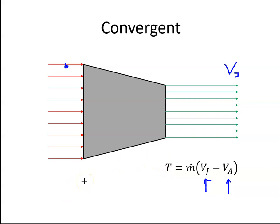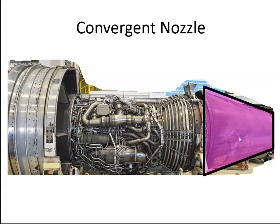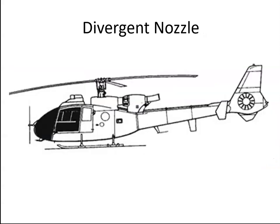Most commercial aircraft, if not all, will have a convergent type nozzle. Here is an example of an engine showing the exhaust nozzle area, and we can see that it is a convergent type.